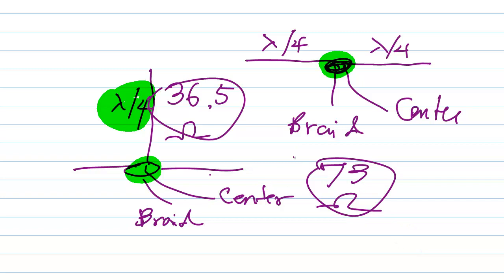So neither of those makes a very good match to 50 ohm coax. You'd say, why would they choose 50 ohms or 52 ohms? Well, it turns out something very interesting happens. Let's take the geometric mean of these two numbers, 36.5 and 73.